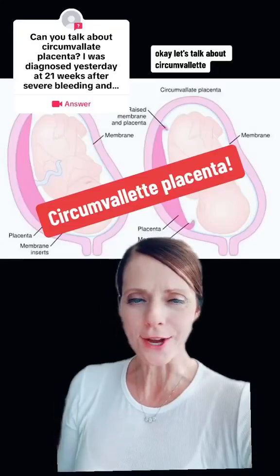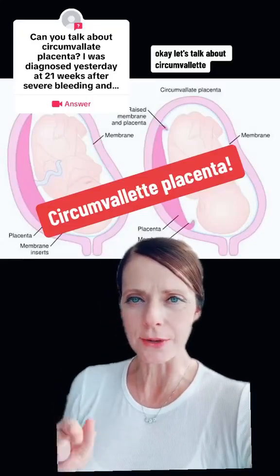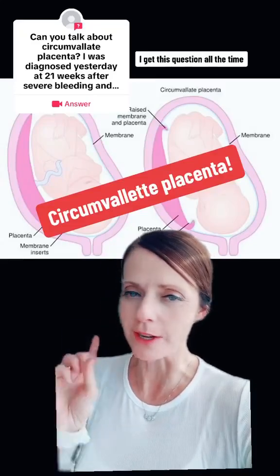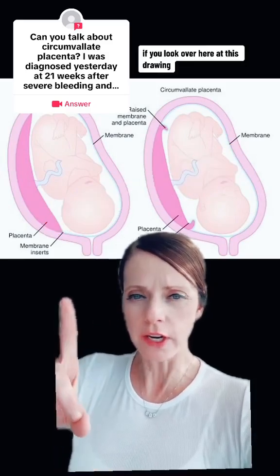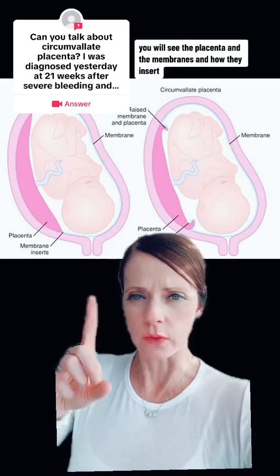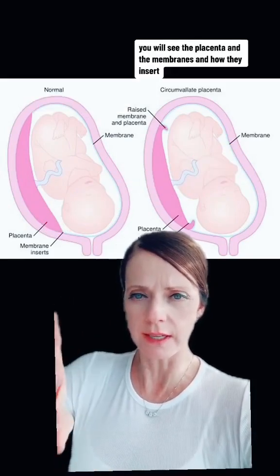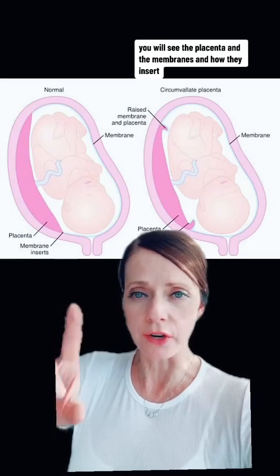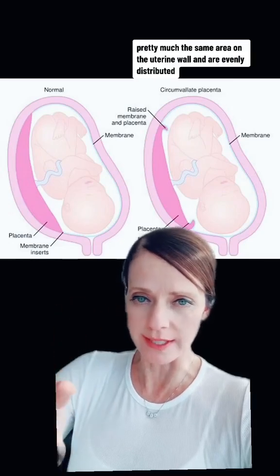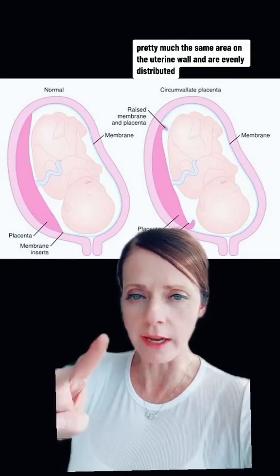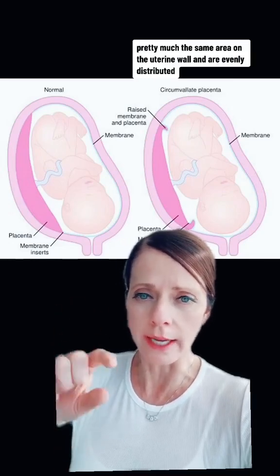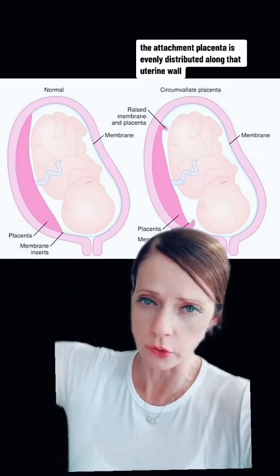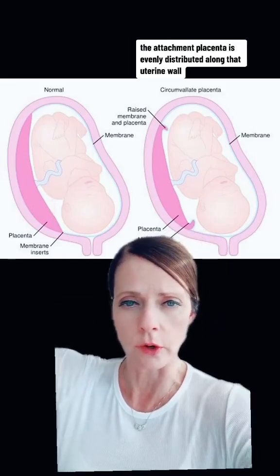Let's talk about circumvallate placenta — I get this question all the time. If you look at this drawing, you will see the placenta and the membranes and how they insert in pretty much the same area on the uterine wall and are evenly distributed. The attachment of the placenta is evenly distributed along that uterine wall.